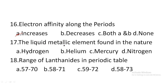Next: the liquid metallic element found in nature — option A: hydrogen, option B: helium, option C: mercury, option D: nitrogen. The liquid metallic element means a metal in liquid state. Hydrogen is a non-metal. The metal in liquid state is mercury. Mercury is used in thermometers. Hence option C is the correct answer.